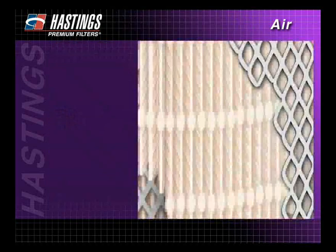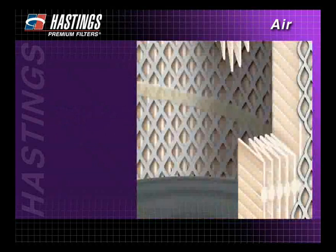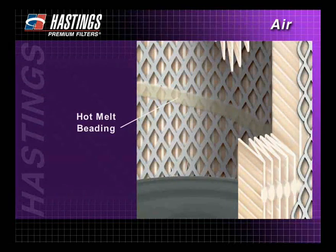Perma-pleat is a special embossing process which creates built-in pleat spacing in the media. This adds extra stability and separation to prevent incoming air from causing pleats to bunch together. In situations where larger filters require deep pleats or where there is high pulsation or direct side inlet flow, Hastings applies a special hot melt beading to lock the pleats in place and prevent bunching or excessive pleat movement.